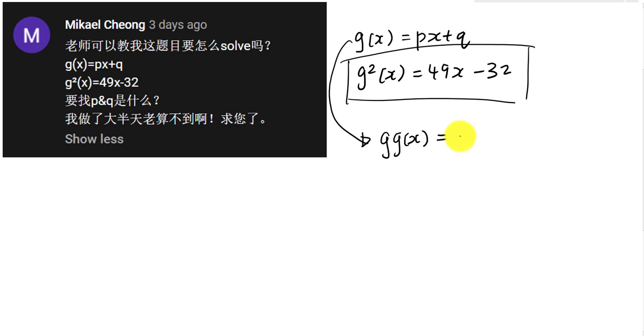So what happens to sub g(x) into g(x) is this is my g(x) is px plus q, right? So this one will become p times the bracket here. Why I don't write x here? Because I'm going to sub my g(x) into my g(x), into my x here.